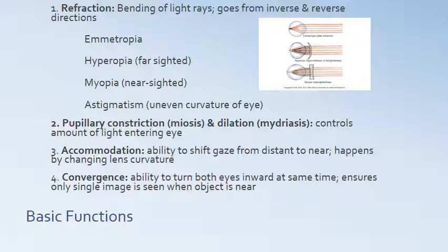Refraction is where the light rays bend from an inverse and reverse direction — we're kind of seeing upside down, even though we aren't. Emmetropia is normal ideal refraction, a perfectly aligned concavity. Hyperopia is farsightedness, where refraction occurs late. Myopia is nearsightedness, where refraction occurs early. Astigmatism is basically uneven curvature of the eye itself.